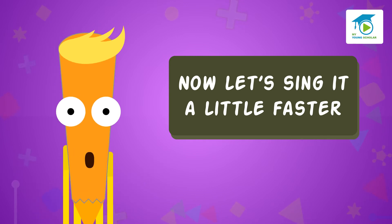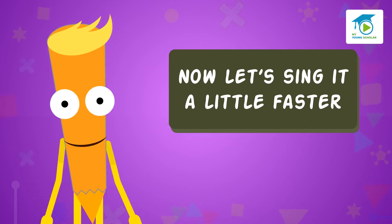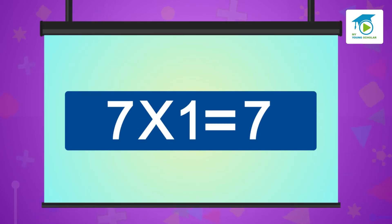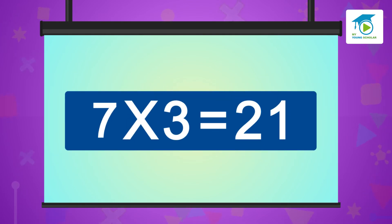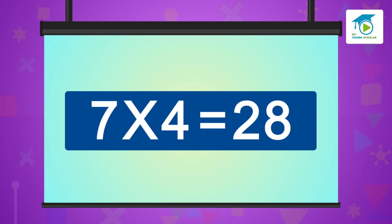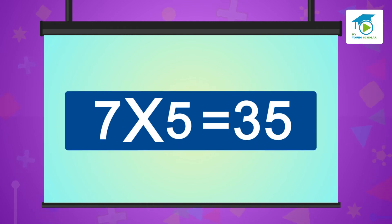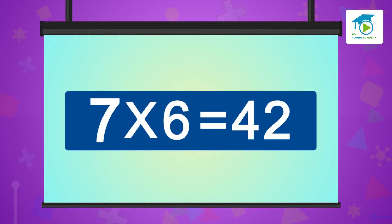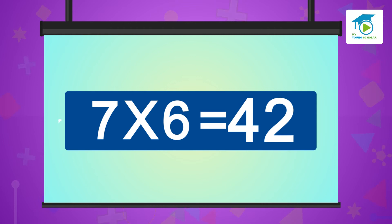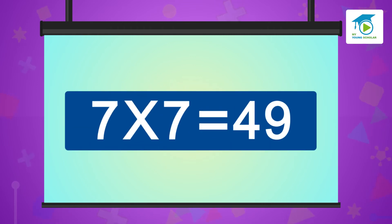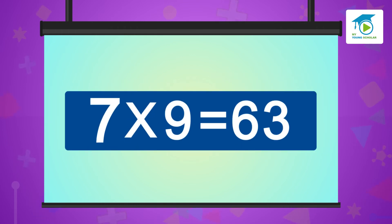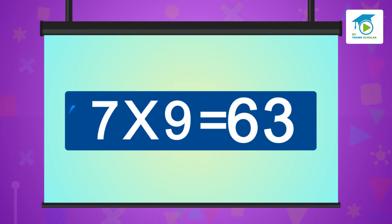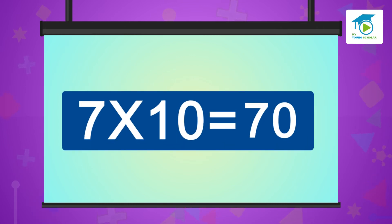Now let's sing a little faster. Seven ones are seven, seven twos are 14, seven threes are 21, seven fours are 28, seven fives are 35, seven sixes are 42, seven sevens are 49, seven eights are 56, seven nines are 63, seven tens are 70.